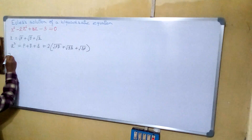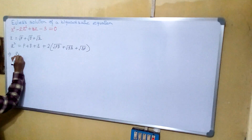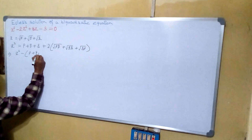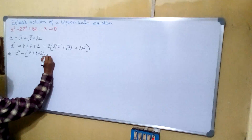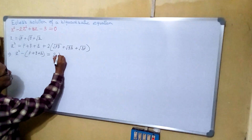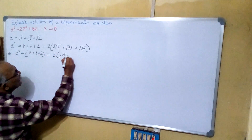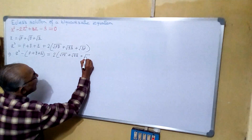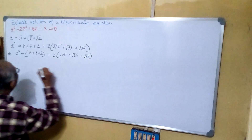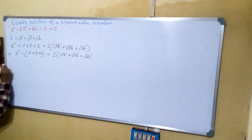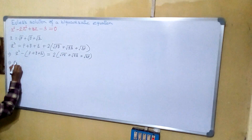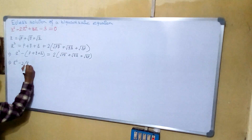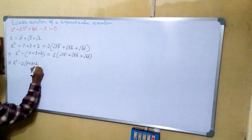This one again we can write in this form: X squared minus (P plus Q plus R) equals to 2 into root PQ plus root QR plus root RP. Now once again squaring both sides.